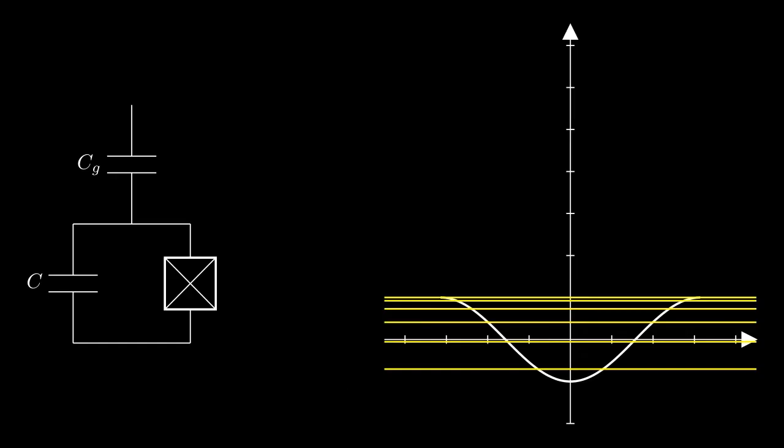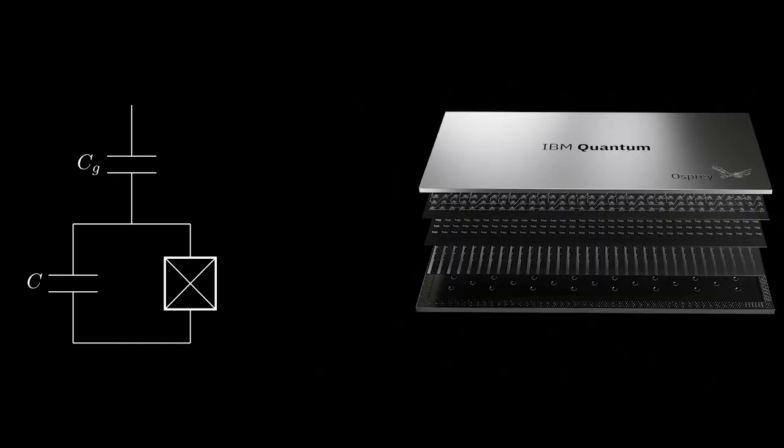The most common form of this qubit right now is a transmon qubit. This is what IBM uses, for example, but many others exist.